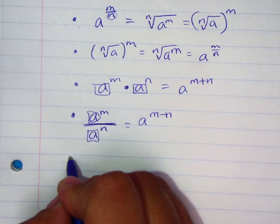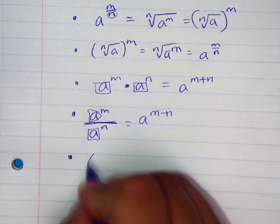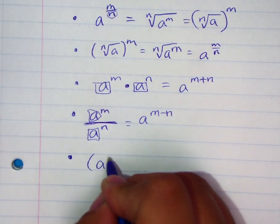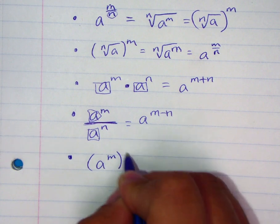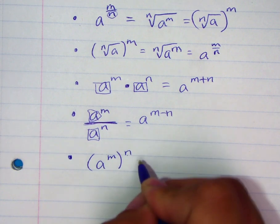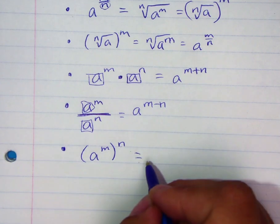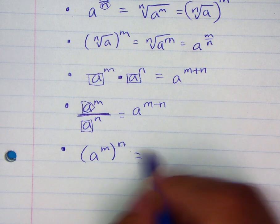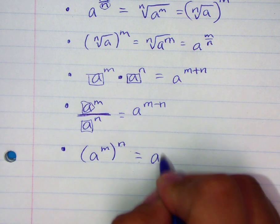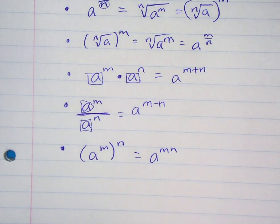Another rule is power to a power, which means if you have something raised to a power and it's raised to another power, you multiply those exponents together.